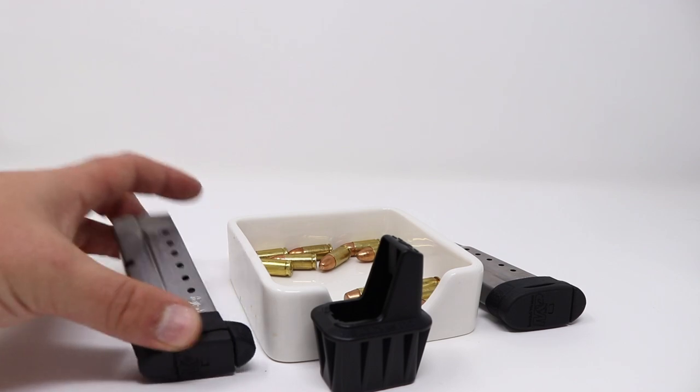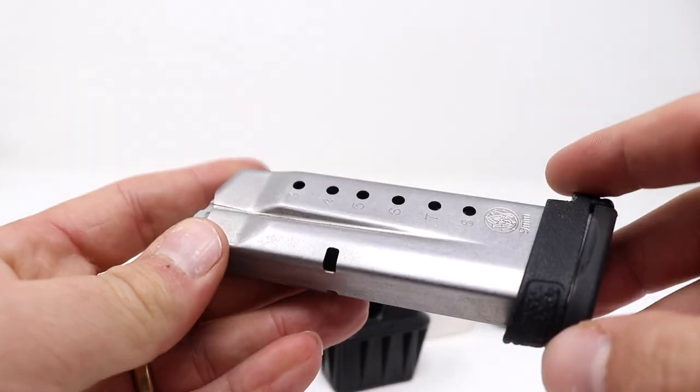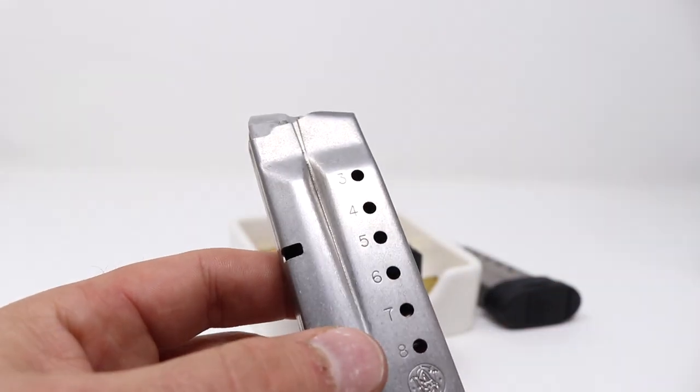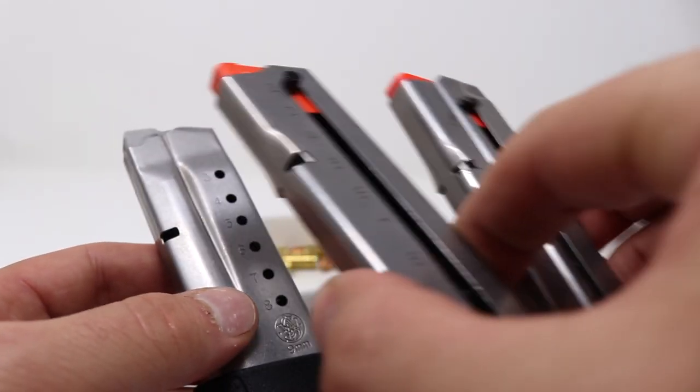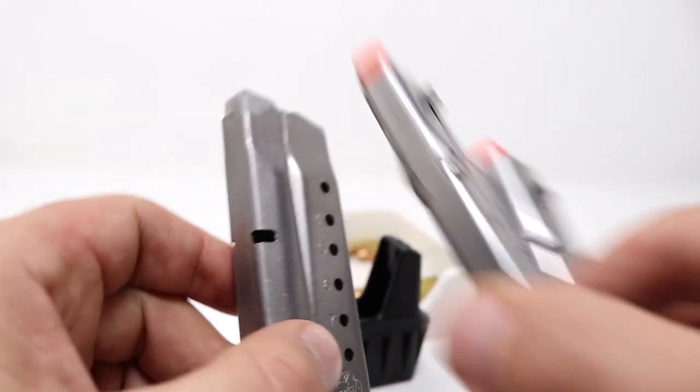Before I get into it though, I want to stress that we're talking about the Shield and Shield 2.0 in 9mm and 40 Smith & Wesson. We're not talking about the Shield Easy Series in 9 or 380, which you can see is a much smaller magazine.